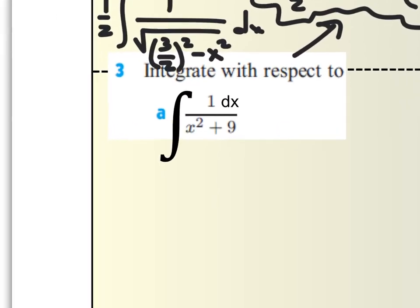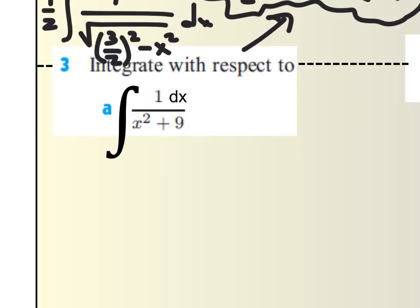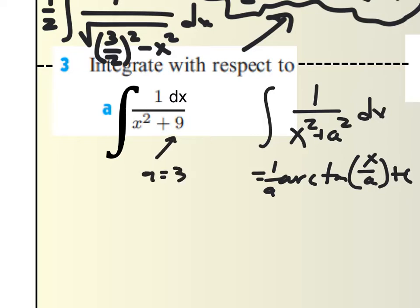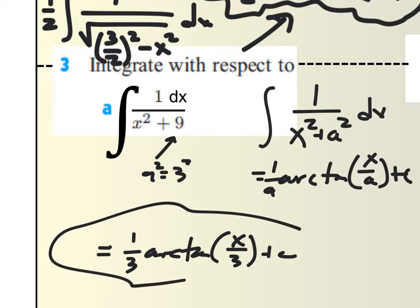Let's do this next one — it looks really close to our arctangent form. We know that integral equals (1/a) arctan(x/a) plus c. In this case, I've got x squared alone already — that's great. What is a? a equals 3 because a squared equals 9. Therefore, this integral equals (1/3) arctan(x/3) plus c. Sweet.